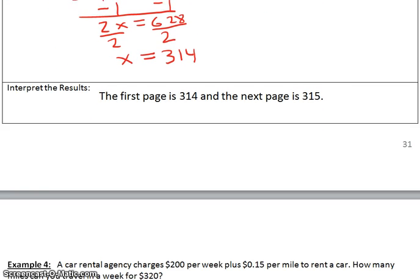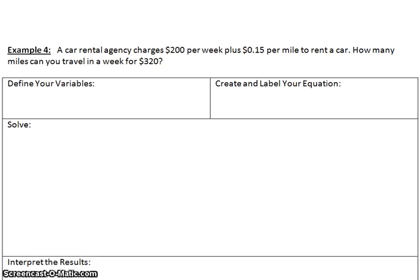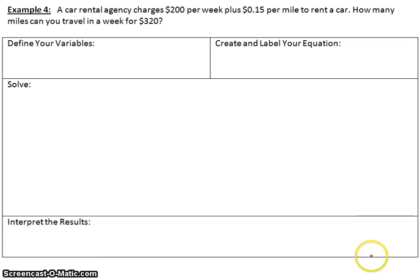We scroll down to our next example. We have example 4 here. A car rental agency charges $200 per week plus 15 cents per mile to rent a car. How many miles can you travel in a week for $320? So we must first define our variable. Our variable goes like this. It says how many miles can you travel in a week? So we know our variable would not signify the weeks. It says how many miles can you travel in a week for $320? So X is our miles.